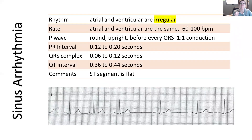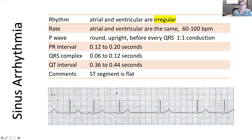With a sinus arrhythmia, the only thing out of normal is the rhythm — with a caveat that the rate may also fall below 60 depending on how much exhalation versus inhalation is captured on your six-second strip. Atrial and ventricular rate are both irregular. The rate should be between 60 to 100, though it may be slightly less than 60. P waves are round and upright with one for every QRS — one-to-one conduction. PR interval is 0.12–0.20 seconds, QRS complex 0.06–0.12 seconds, QT interval 0.36–0.44 seconds, and the ST segment is flat.